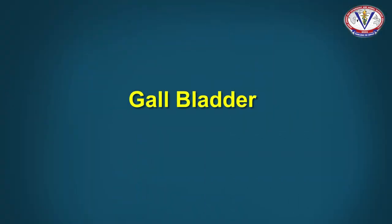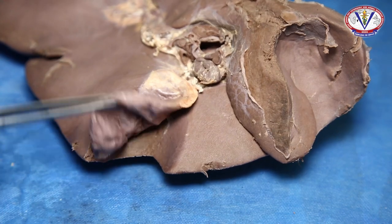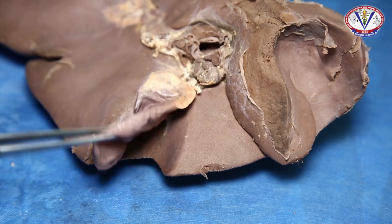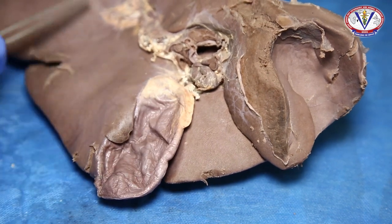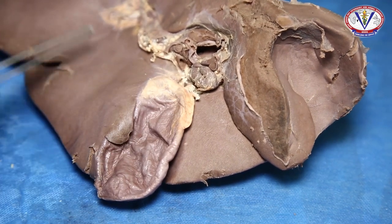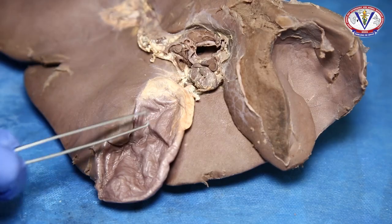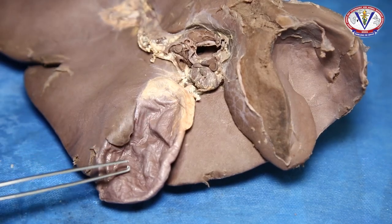The gallbladder is a pear-shaped sac which lies on the visceral surface of the liver and is largely in contact with the abdominal wall.